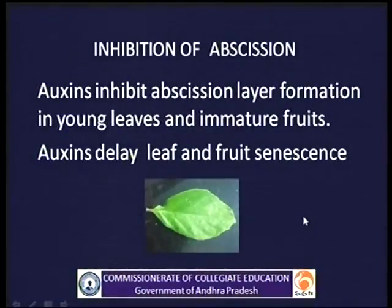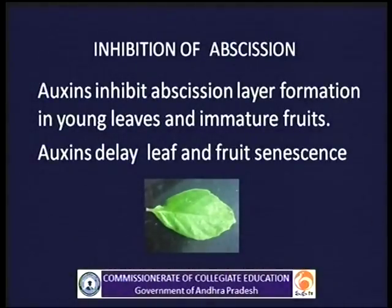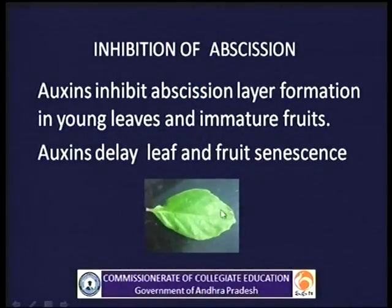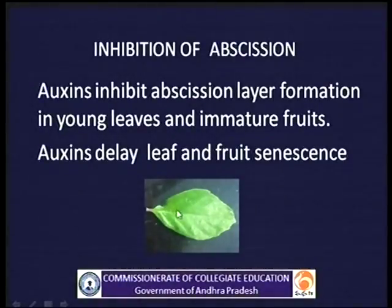Inhibition of abscission: Abscission layer is formed due to aging. Sometimes young leaves and immature fruits also show drop-down because of abscission layer formation, but auxins prevent the abscission of these young leaves and immature fruits. By applying auxins, abscission layer formation can be prevented.